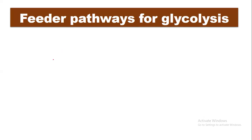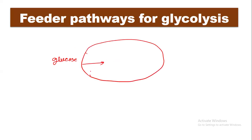Previously we have discussed that when glucose enters inside the cell, the first major pathway is glycolysis, happening inside the cytosol. Through this pathway, glucose is finally converted into two molecules of pyruvate.